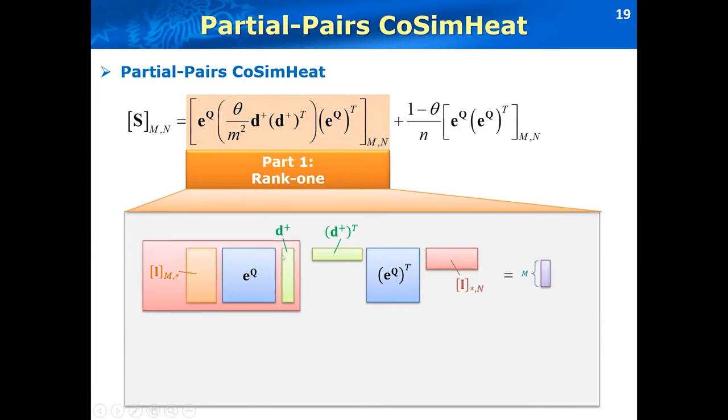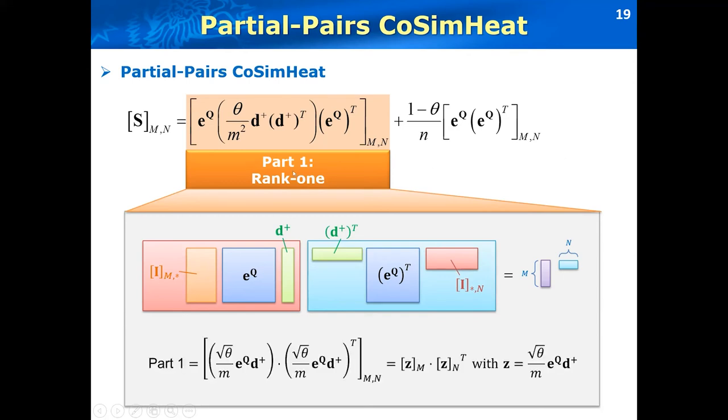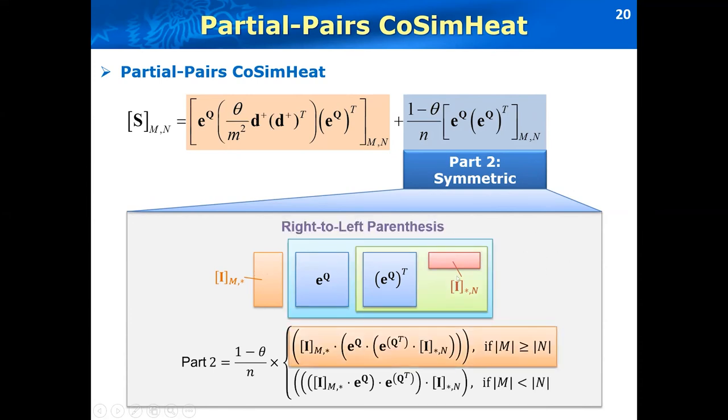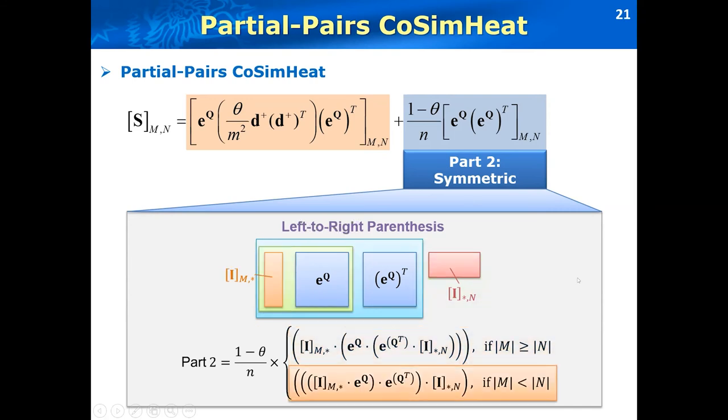The first part we observed is that this of our degree vector, it can be decomposed as a rank one matrices. As a result, when we combine the matrix multiplications as follows, we can get this short column vector for the left part. And same reason, we can get this shorter row vector for the right part. That is to say, this first part can be decomposed as a rank one matrices. And for the second part, we observe that the term in the bracket is symmetric. Thus, to efficiently compute this part, we can see it depends on the size of M and N. When the size of N is smaller than the size of M, then we can use right to left parentheses to do the matrix modifications. Otherwise, we will use left to right associated rows from matrix products.